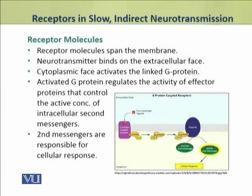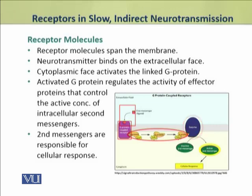The receptor molecule is a large molecule that spans the membrane. The neurotransmitter binds at the extracellular phase of this receptor molecule. The cytoplasmic phase of this receptor activates the G protein linked to it. The activated G protein regulates the activity of an effector protein, which may be an enzyme. This enzyme controls the active concentration of second messengers, which are responsible for the cellular response.